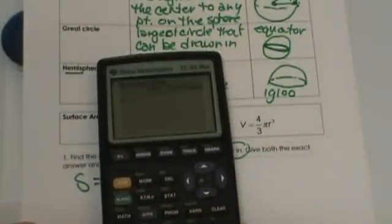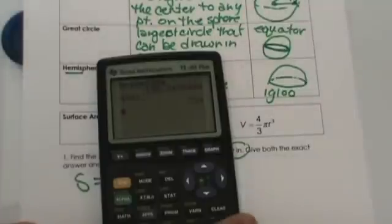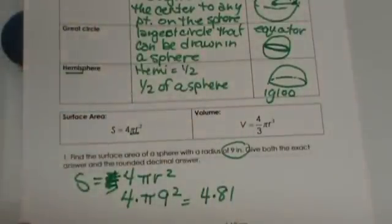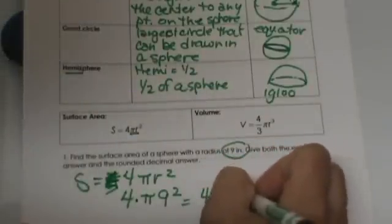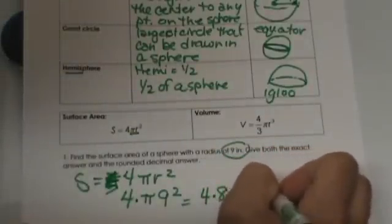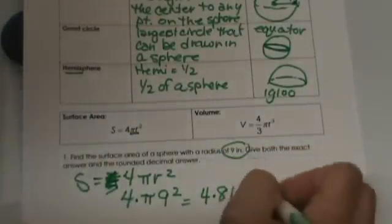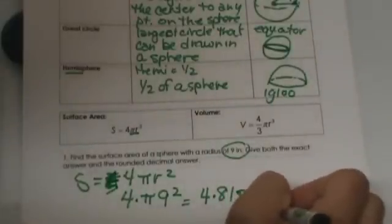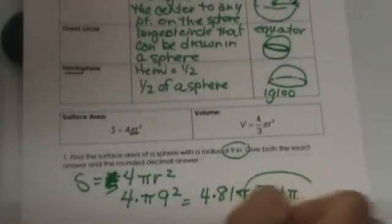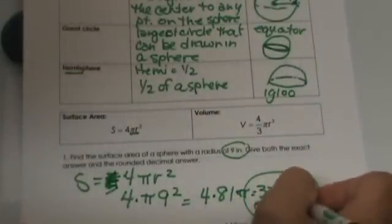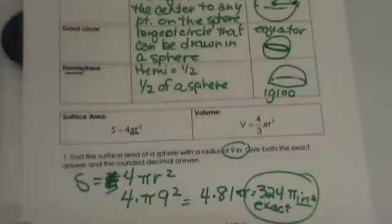Let's go over here and do 4 times 81, and I get 324. So we're going to get 324π as our exact answer, and that is in inches squared because it is area.